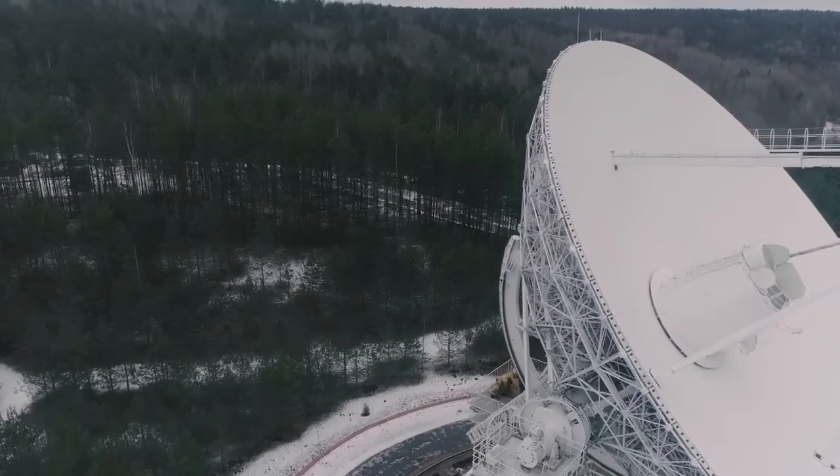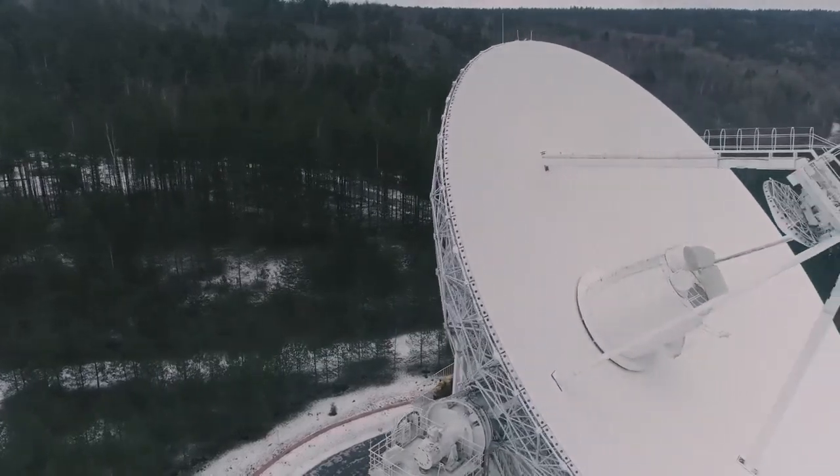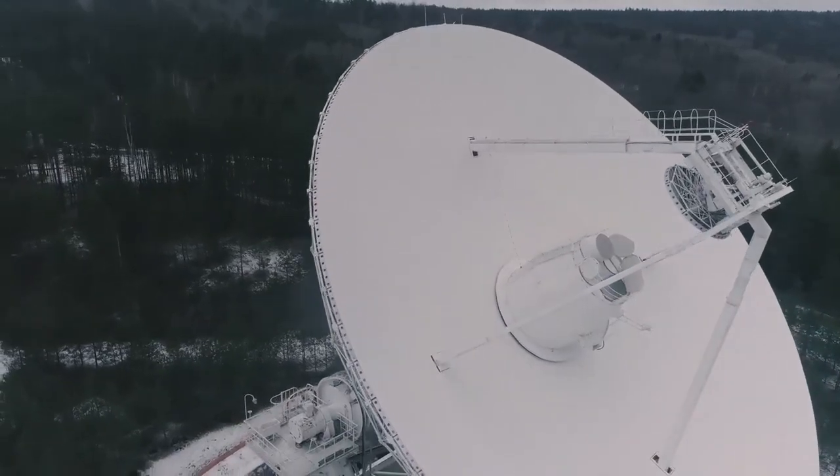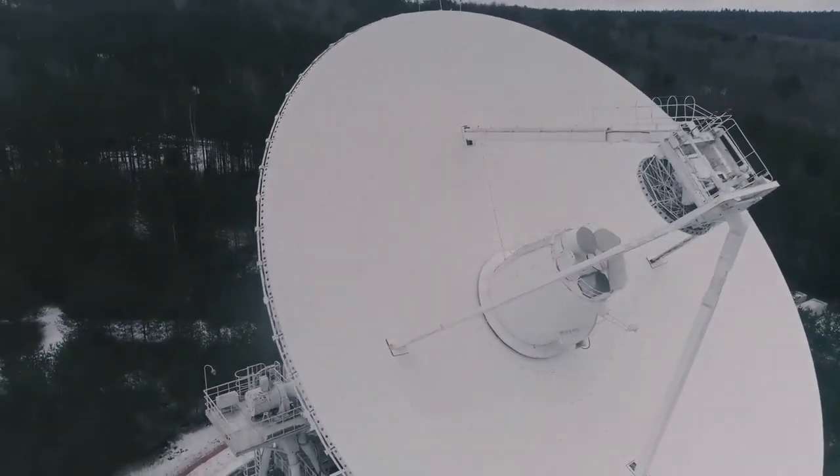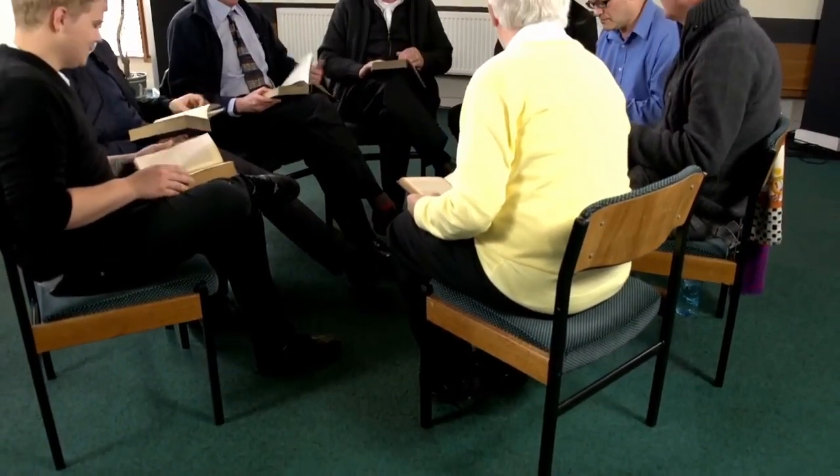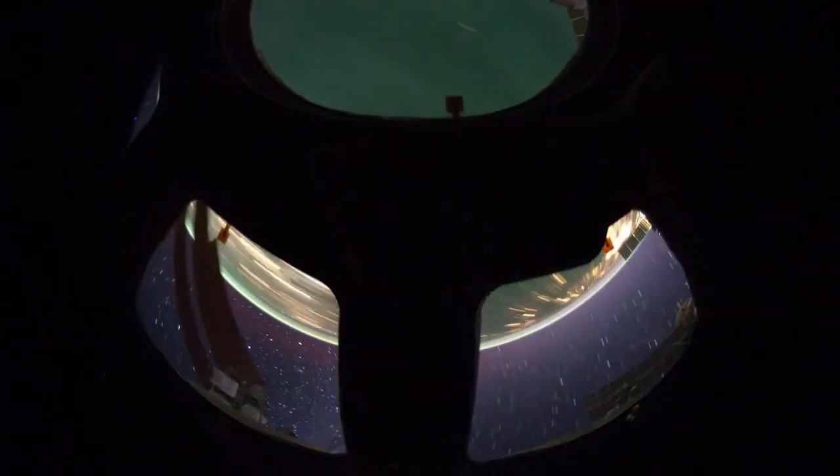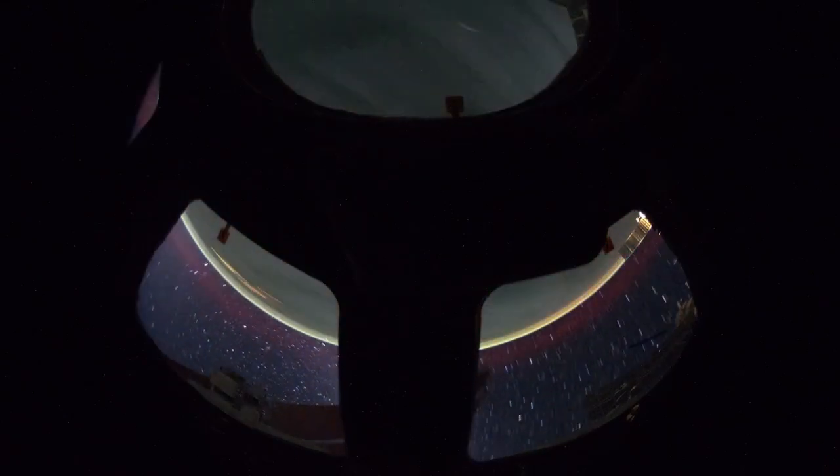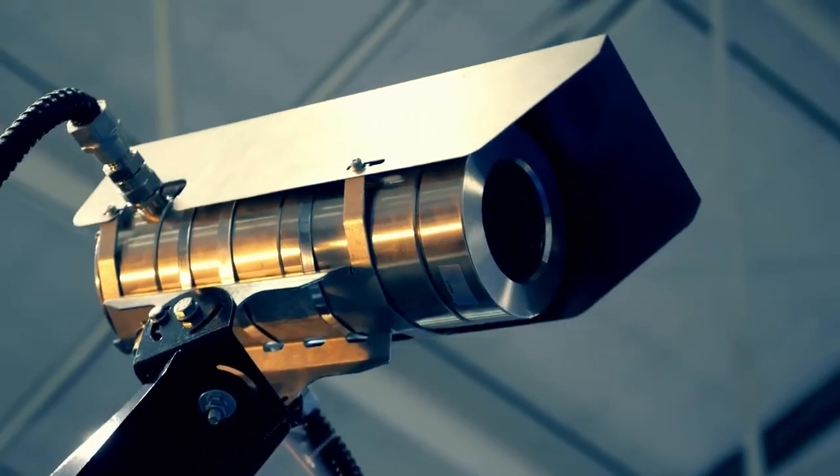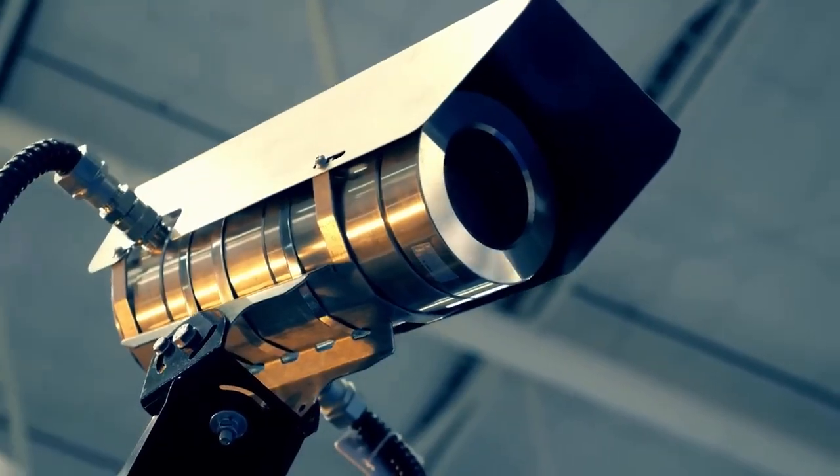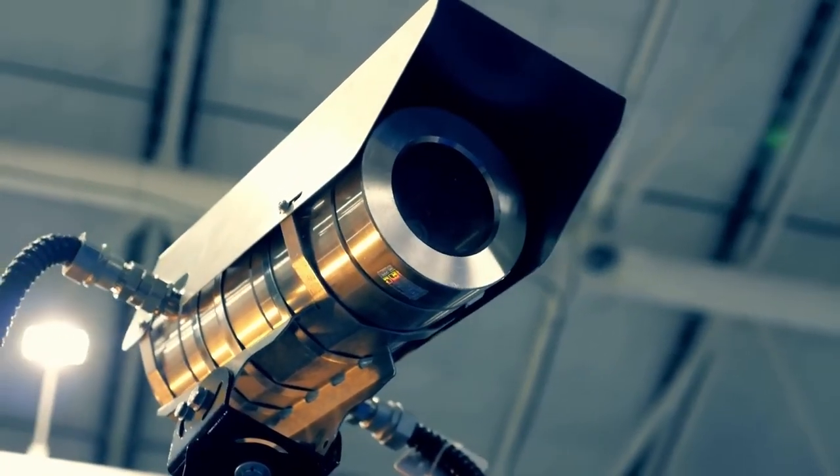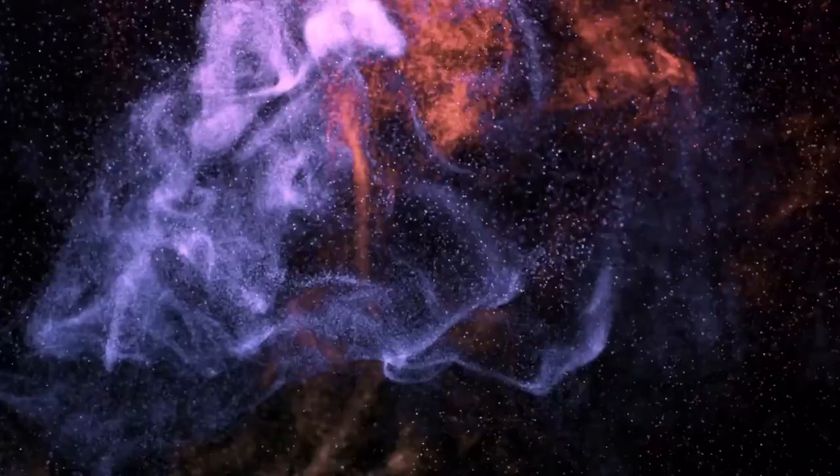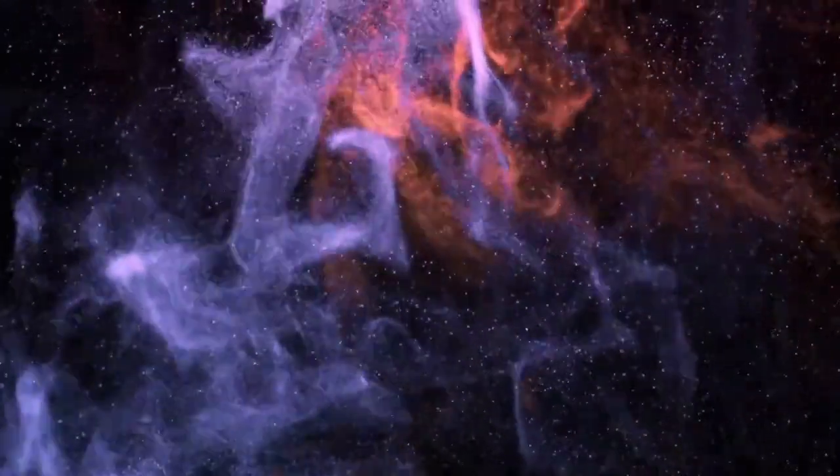3I Atlas streaks through the solar system at a mind-bending 130,000 km/h. That's over 58 km/s, fast enough to cross the distance from Earth to the Moon in just over one hour. Its orbital eccentricity, a measure of how non-circular its path is, was calculated at over 2.2, making it not only interstellar, but the most hyperbolic object ever observed. That kind of speed isn't just rare, it's almost unthinkable, but it gets stranger. Its velocity suggests it didn't come from a nearby star. It came from much farther.